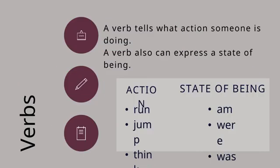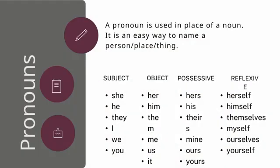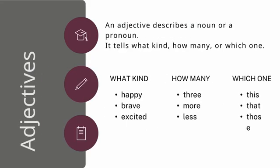A verb tells what action someone is doing; a verb can also express a state of being. A pronoun is used in place of a noun — it is an easy way to name a person, place, or thing. An adjective describes a noun or a pronoun; it tells what kind, how many, or which one.